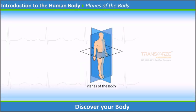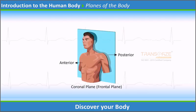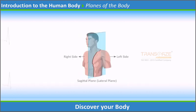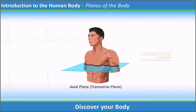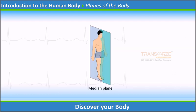Planes of the body are imaginary lines — vertical or horizontal — drawn through an upright body. The coronal plane or frontal plane is a vertical plane running from side to side, dividing the body or any of its parts into anterior and posterior portions. The sagittal plane or lateral plane is a vertical plane running from front to back, dividing the body into right and left sides. The axial plane or transverse plane is a horizontal plane that divides the body into upper and lower parts. The median plane is a sagittal plane through the midline of the body, dividing it into right and left halves.